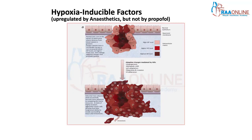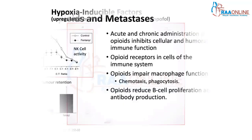These very tough cancer cells survive adverse circumstances, can proliferate, cause local recurrence, and even metastasis. Hypoxia inducible factors help and promote tumor growth. Most anesthetics actually promote the induction of hypoxia inducible factor genes, but propofol does not upregulate hypoxia inducible factors, so propofol appears to be protective in this regard as well.